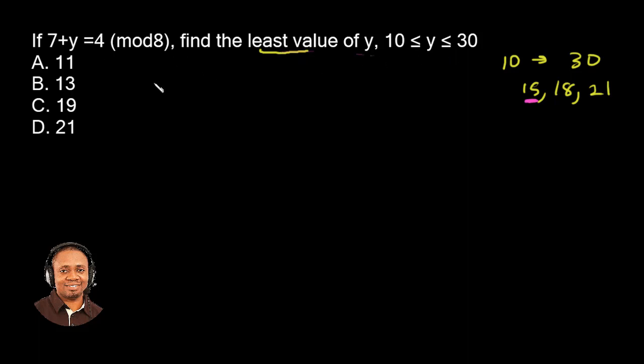So now let's quickly go to the question: 7 plus Y equals 4 modulo 8. What this means is that 4 is the modulo 8 residue of 7 plus Y.